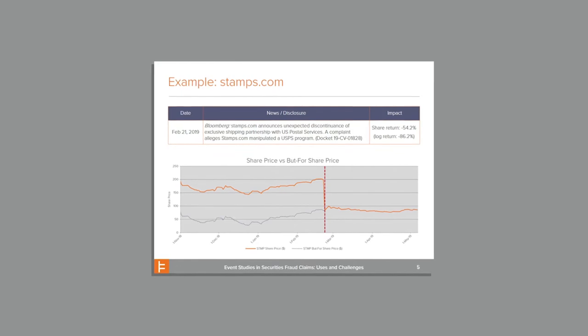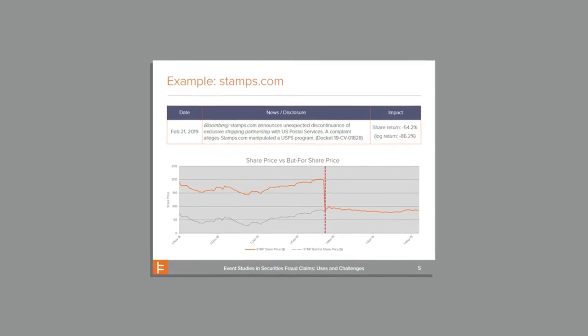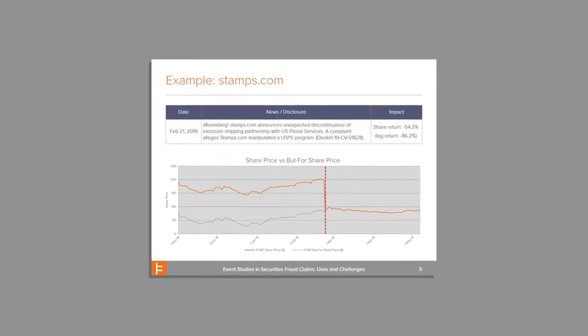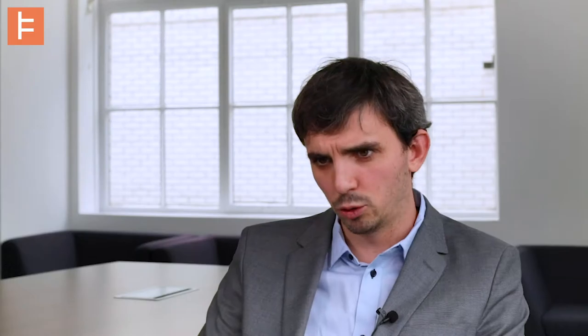The new information coming into the market causes the market to react and usually causes a dramatic change — a drop in the stock price. That drop, that change in the stock price, is a measurement of how much the older stock price was inflated before the information became public.